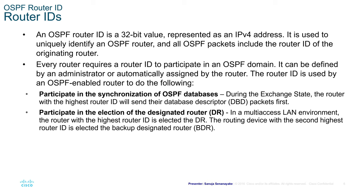An OSPF router ID is a 32-bit value represented as an IPv4 address. It is used to uniquely identify an OSPF router, and all OSPF packets include the router ID of the originating router — that's how we know where the packet originated. Every router requires a router ID to participate in the OSPF domain. It can be defined by an administrator or automatically assigned by the router.